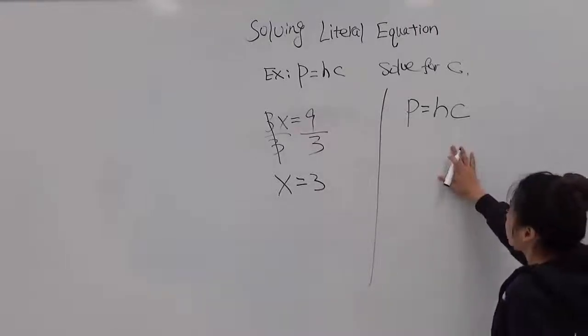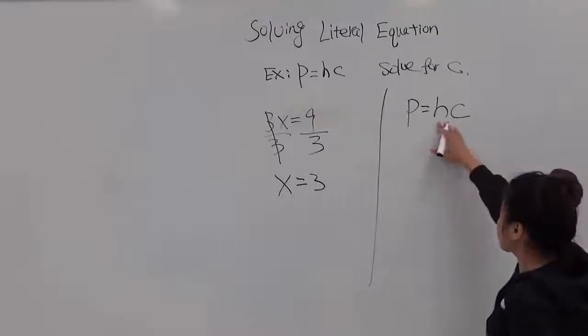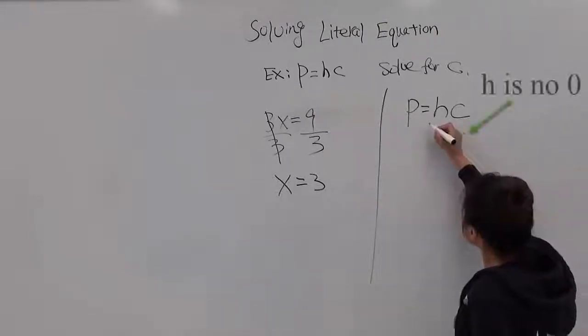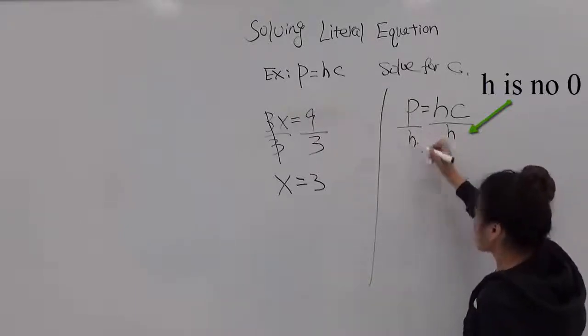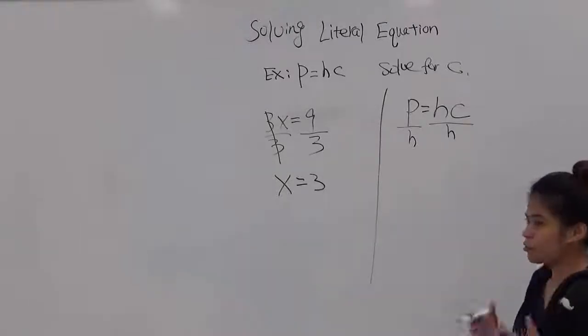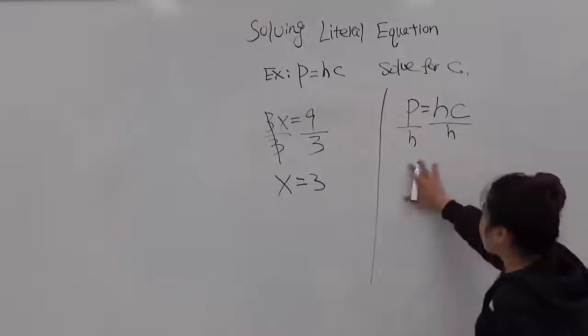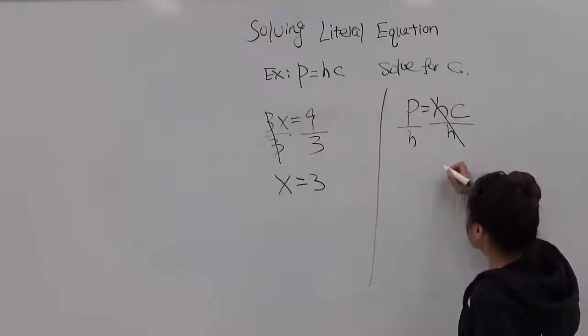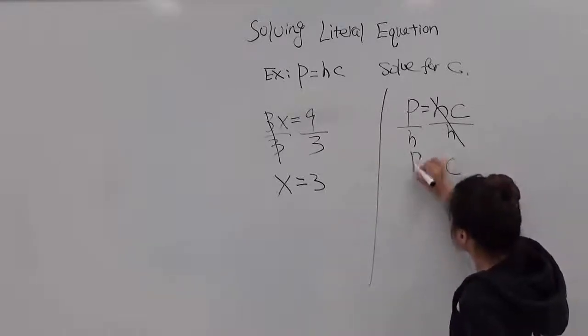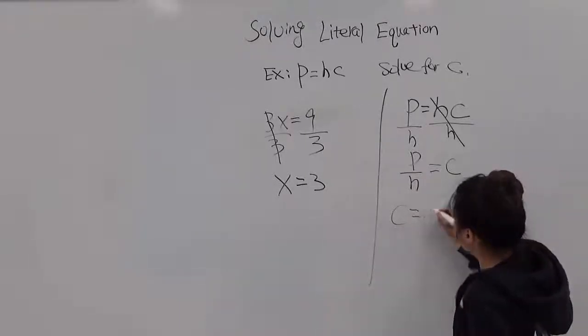Then we can look at here. You are asked to solve for c, so you need to isolate c. But h has been multiplied by c. So by inverse operation, we're going to divide h on both sides. Remember, this is an equation. So whatever you do on one side, you have to do the same on the other side. So divide h on both sides. So this h is going to be cancelled out. So we'll be left with c equals p divided by h.